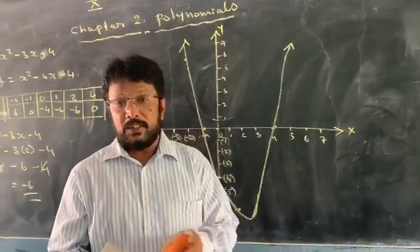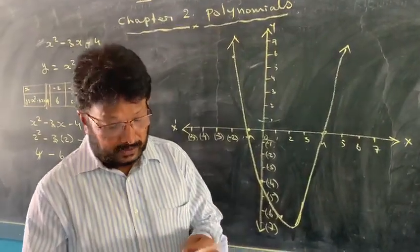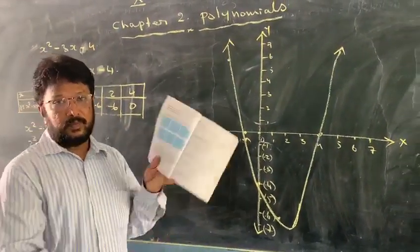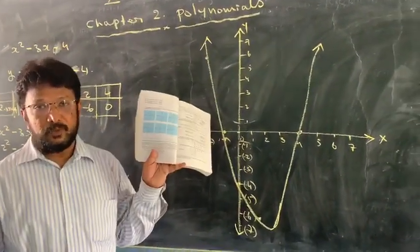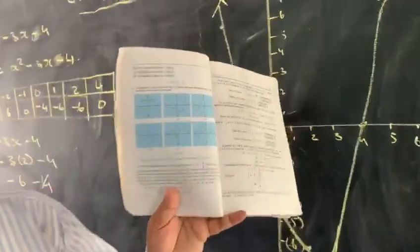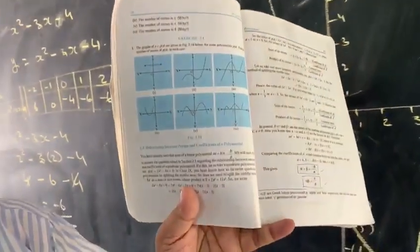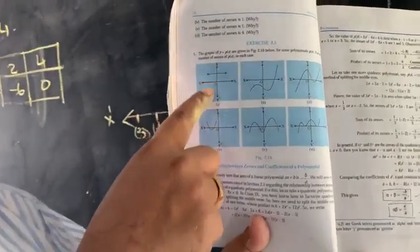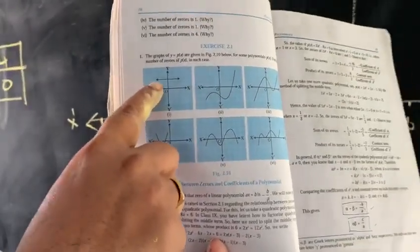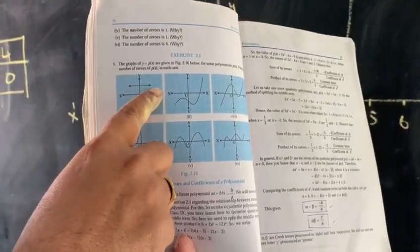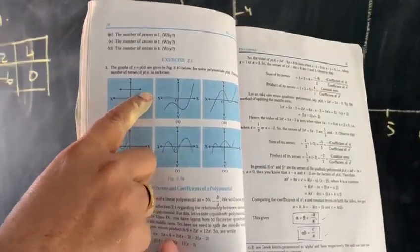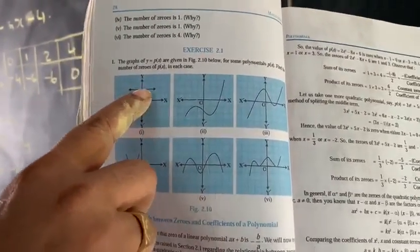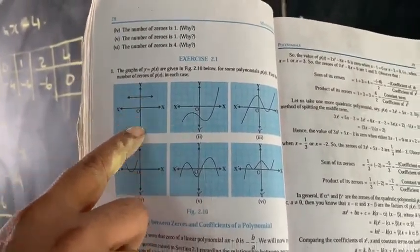Now we will see x-axis, exercise number 2.1 — that is the graph section. In your dashboard, look at exercise 2.1 where various graphs are given. See the first one: the first graph is not intersecting the x-axis. It is a linear graph, parallel to the x-axis. That is why the answer will be zero.